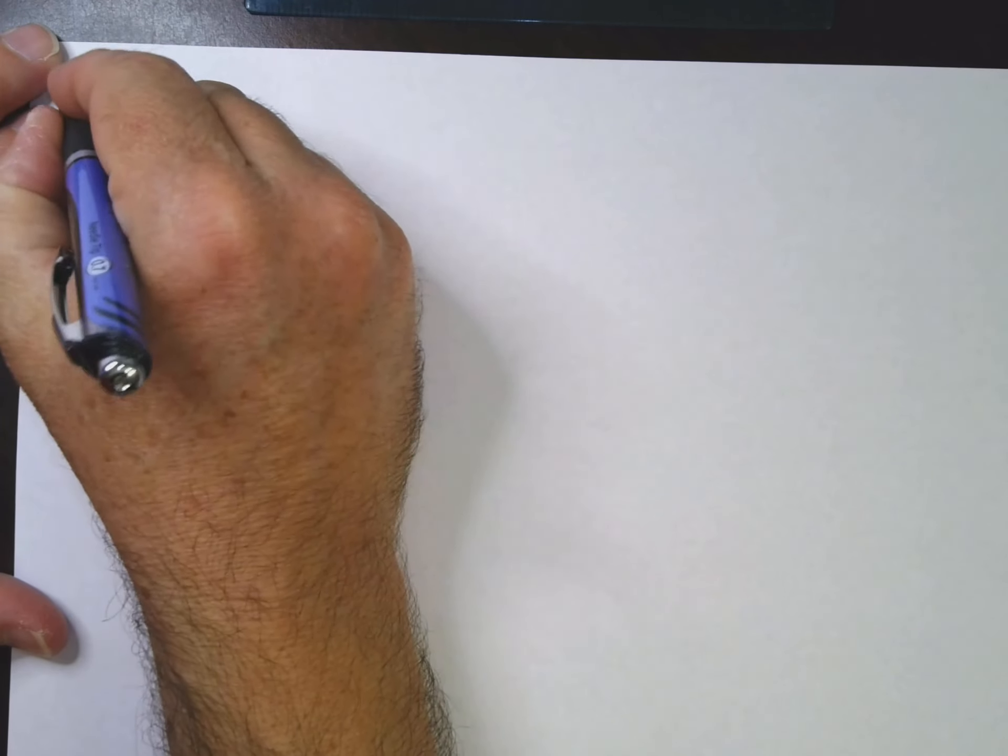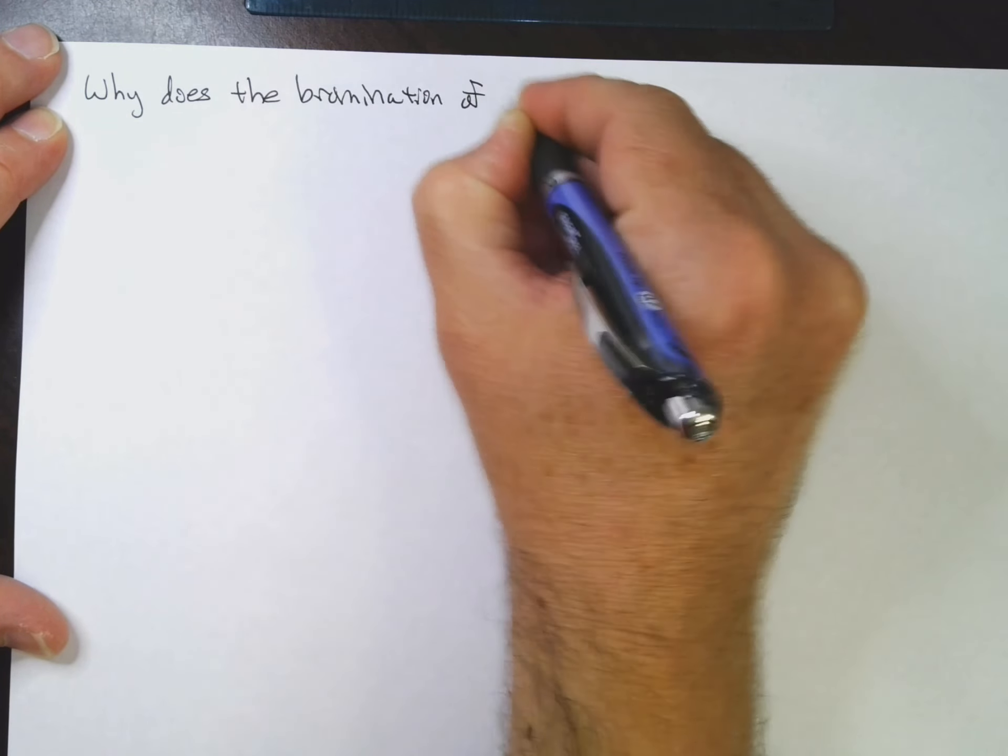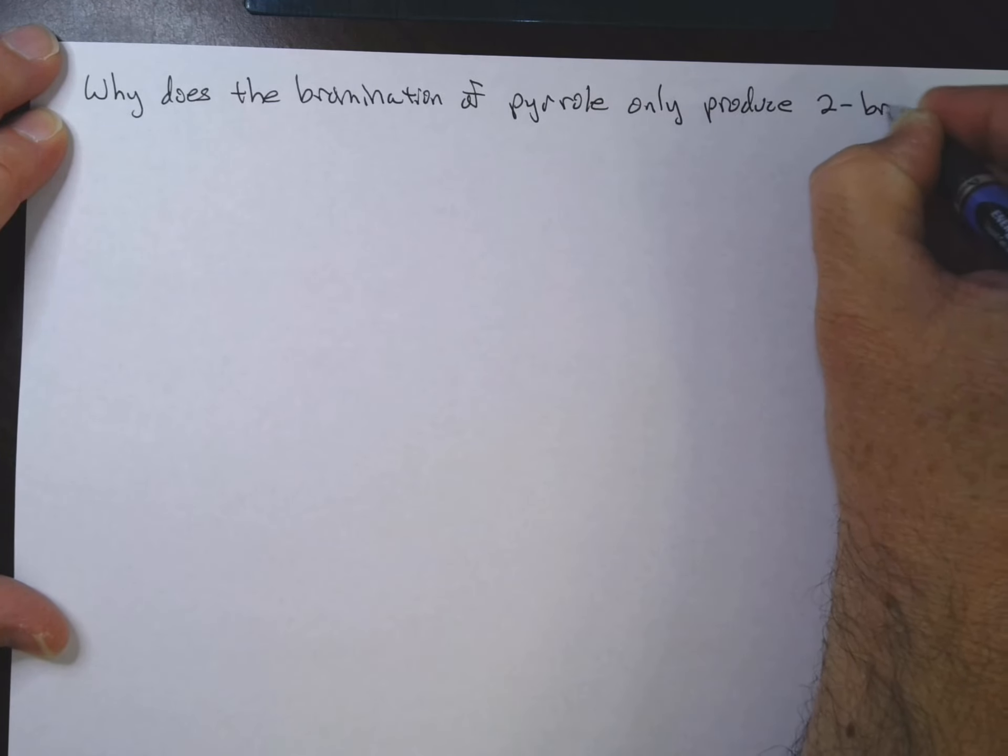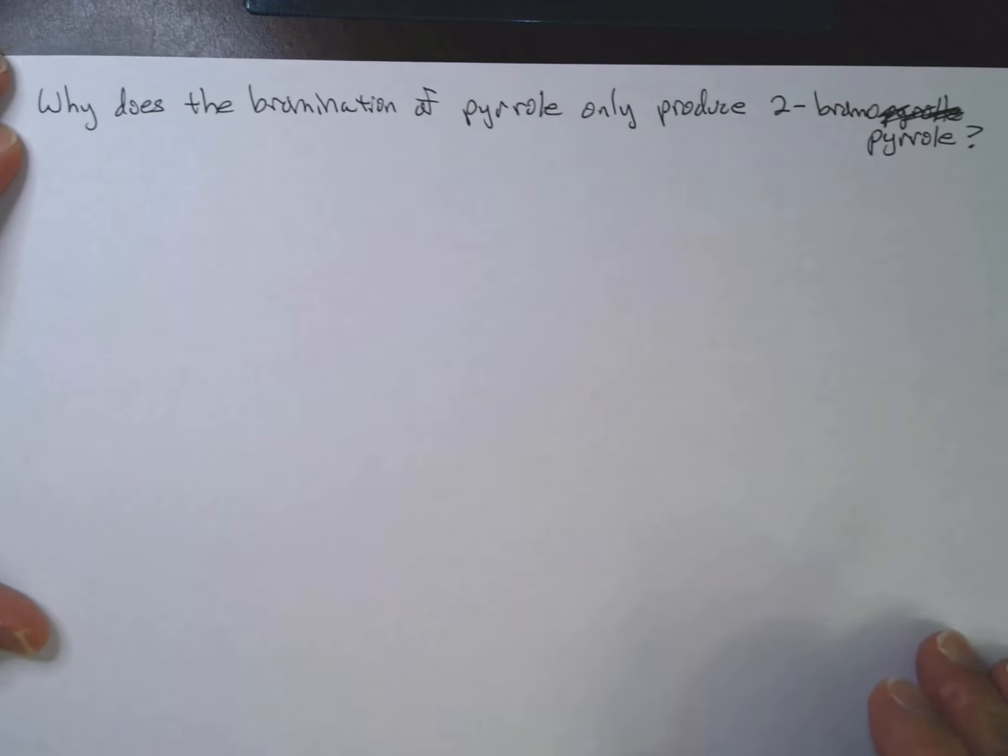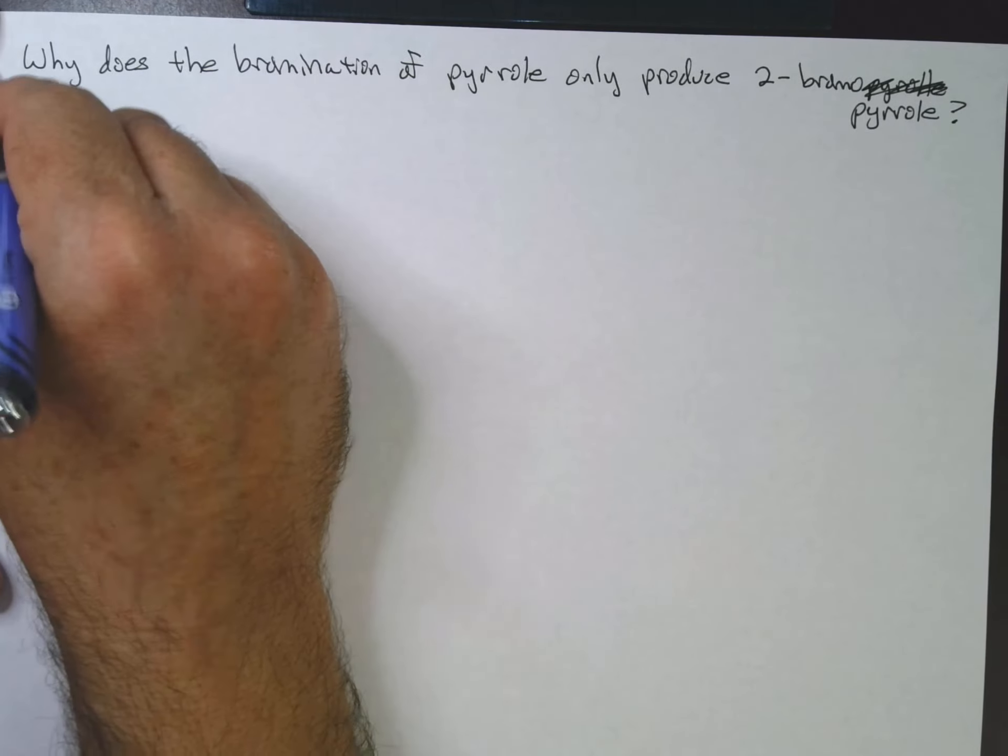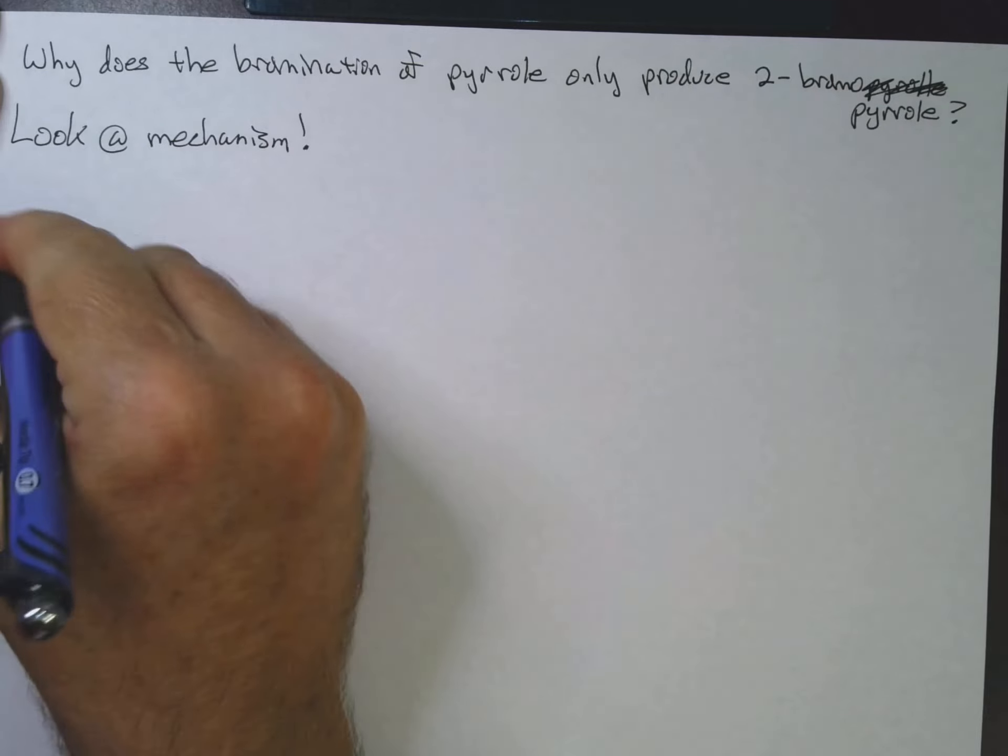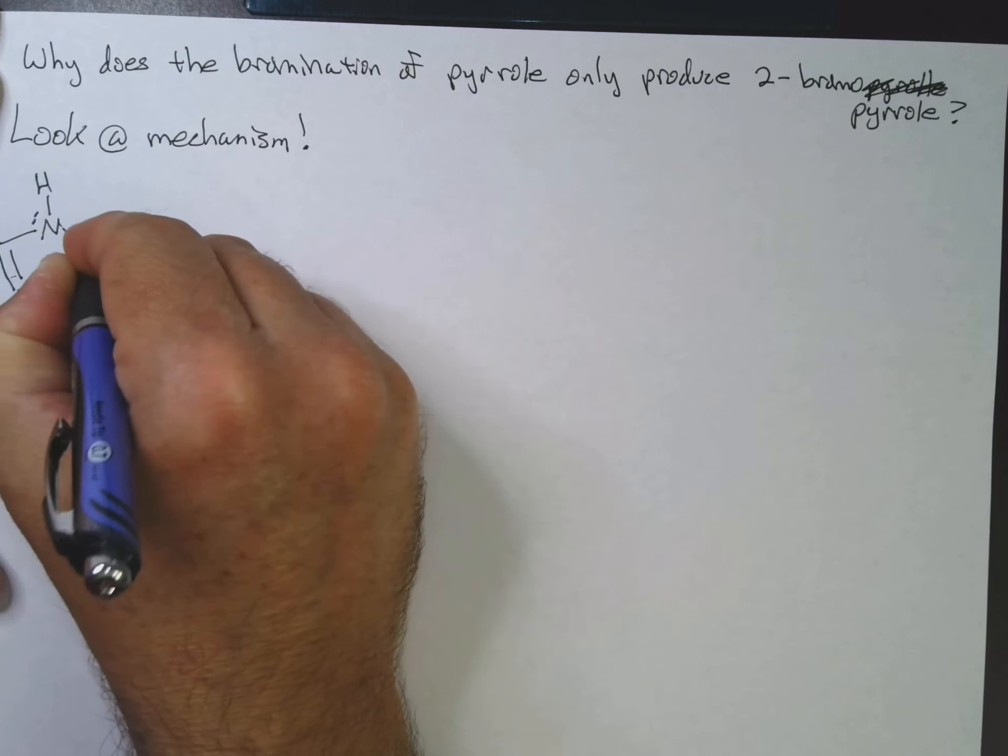So let's look at the question of why the bromination of pyrrole only produces two bromo pyrrole. So let's take a look at what's going on here. We want to look at the mechanism. So let's take our pyrrole here, lone pair, and I'm going to put in hydrogens here. Remember, it's always helpful to draw your hydrogens, that way you can keep track of where your positive charges are.